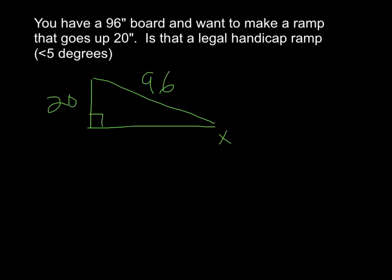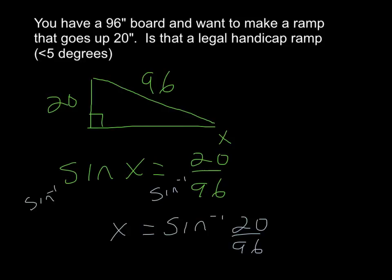So the opposite hypotenuse, we've got sine, set up sine. So you've got sine of x equals 20 over 96. How do you undo a sine with a sine inverse? That second function sine button on the calculator. So the sine inverse on the left cancels the sine. The sine inverse on the right means do sine inverse of 20 over 96. So x equals sine inverse of 20 over 96, which is x equals 12 degrees.